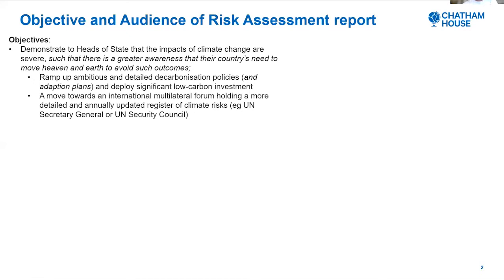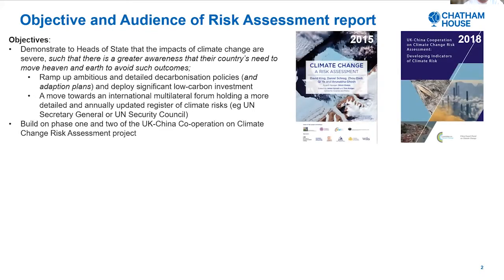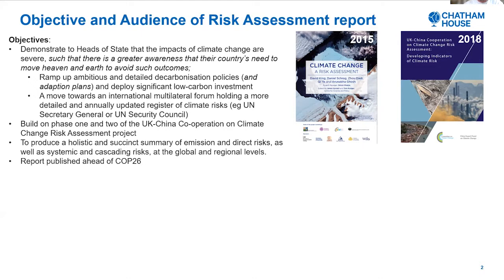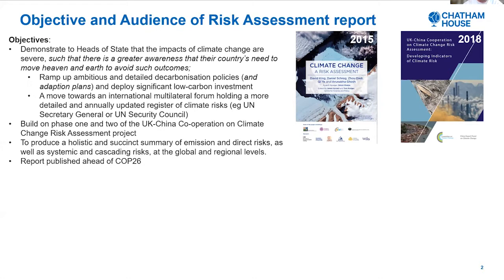This includes producing detailed decarbonisation policies and adaptation plans and deploying significant low-carbon investment. And a move towards — and this would be interesting to pick up in the Q&A later — a move towards an international multilateral forum holding a more detailed and annually updated register of climate risks, for instance, the UN Secretary General or the UN Security Council. All of the work is based on phase one and two of the UK-China cooperation on climate change risk assessment project. The idea was to produce a holistic and succinct summary of emissions and direct risks, as well as systemic and cascading risks at global and regional levels, with the reports published ahead of COP26.